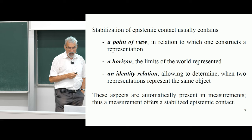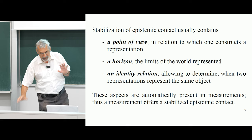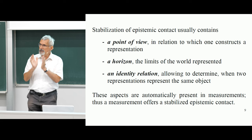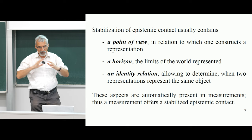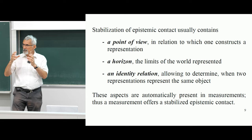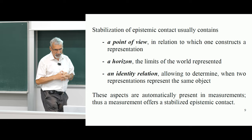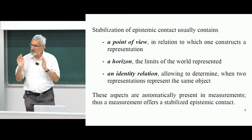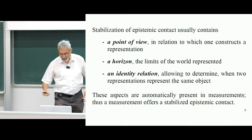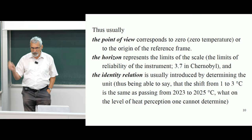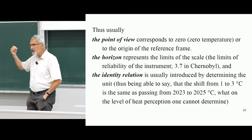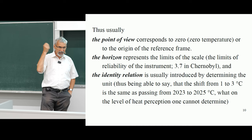This stabilization of epistemic contact usually has three components. First, there is a point of view relative to which I construct the representation. Second, there is the horizon — the limits of the world represented. Third, there is a kind of identity relation where I am able to detect the same object in different positions or places. These aspects are automatically present in measurement. The point of view corresponds to zero — zero temperature or the origin of the reference frame. The origin of the reference frame is not something real — it just gives a point, like the nail on the wall in the Dürer etching, from which we construct the representation.